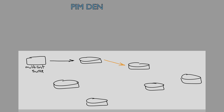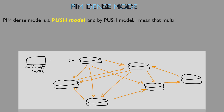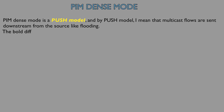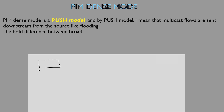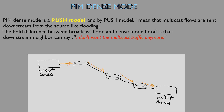PIM Dense Mode is a push model, and by push model, I mean that multicast flows are sent downstream from the source — like flooding. The bold difference between broadcast flood and dense mode flood is that a downstream neighbor can tell the router it doesn't want the multicast traffic anymore.